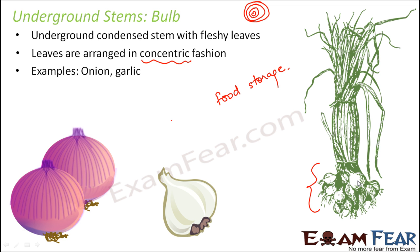Now if you compare the modification of underground stem in onion with that of potato, you will see structural differences. In the case of potato, you do not have fleshy leaves, but here in onion you have many leaves. In potato you had buds from where new plants can rise, but in onion you do not really have those kinds of buds. Since structurally they are different, different names have been given to the two: for potato, that modification is called a tuber, and for onion and garlic, the modification with fleshy leaves is called a bulb.